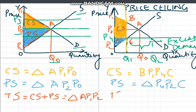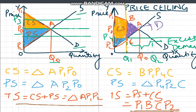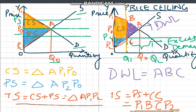Our total surplus equals producer surplus plus consumer surplus, so this entire trapezium P1, B, C, P2 is our total surplus. Comparing the two total surpluses — triangle P1, A, P2 without externality versus trapezium P1, B, C, P2 with price ceiling — we can see there is a loss in total surplus equal to triangle ABC. Therefore, this region is our deadweight loss — triangle ABC is our deadweight loss. Thus, price ceiling leads to deadweight loss. We can say that both price ceiling and price floor lead to deadweight loss.